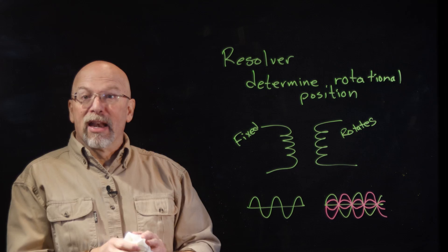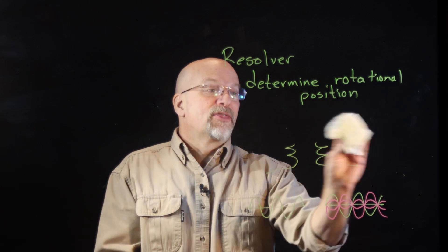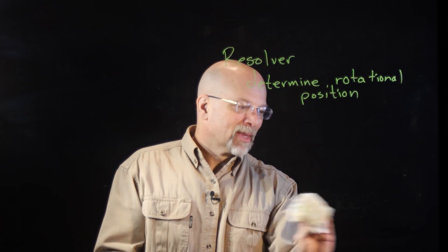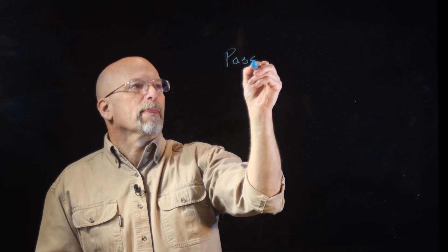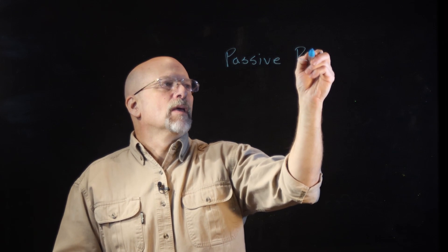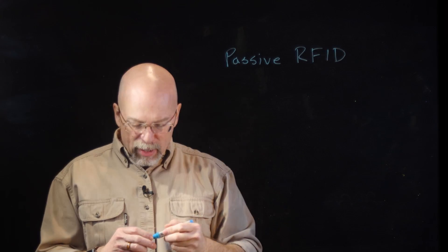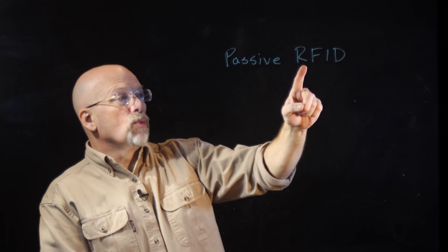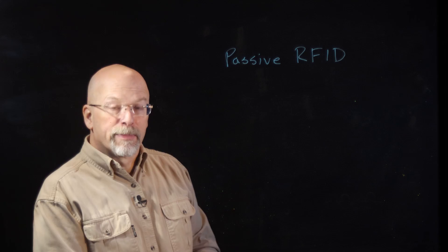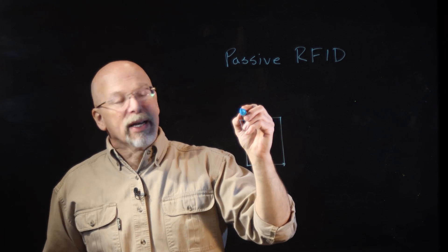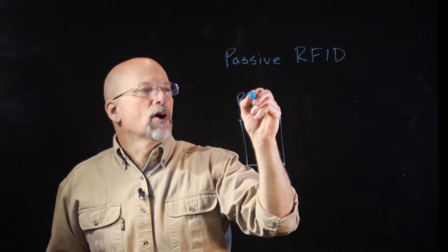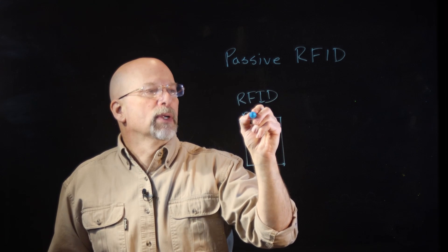Another thing that transformer theory gives us is RFID tags, specifically passive RFID. For those of you not familiar with the term RFID, we've got radio frequency identification. And you've got a transmitter, or a reader, sometimes it's just simply called an RFID reader.